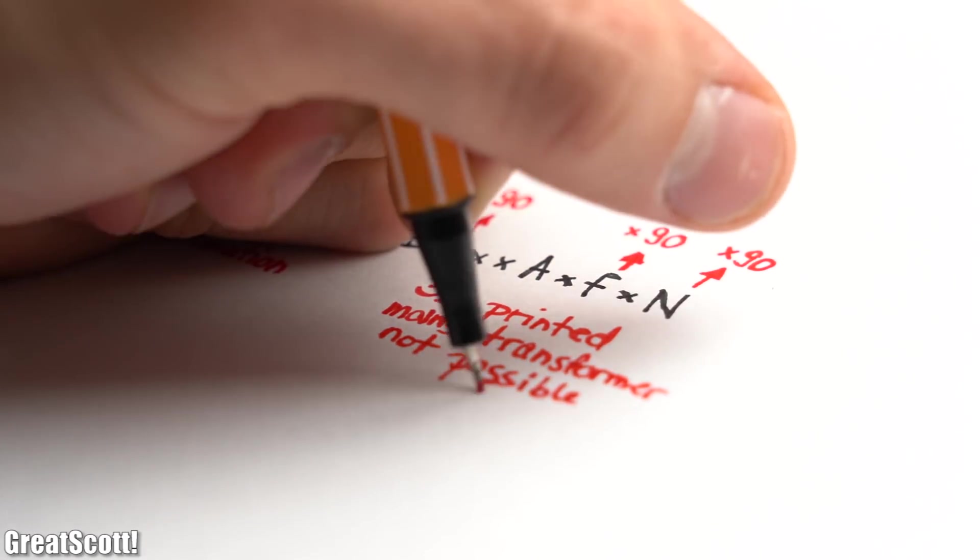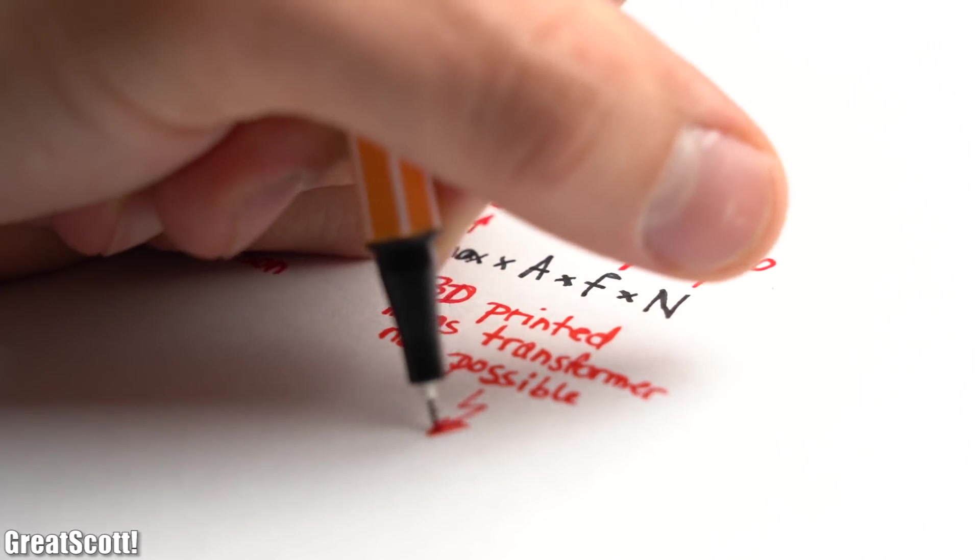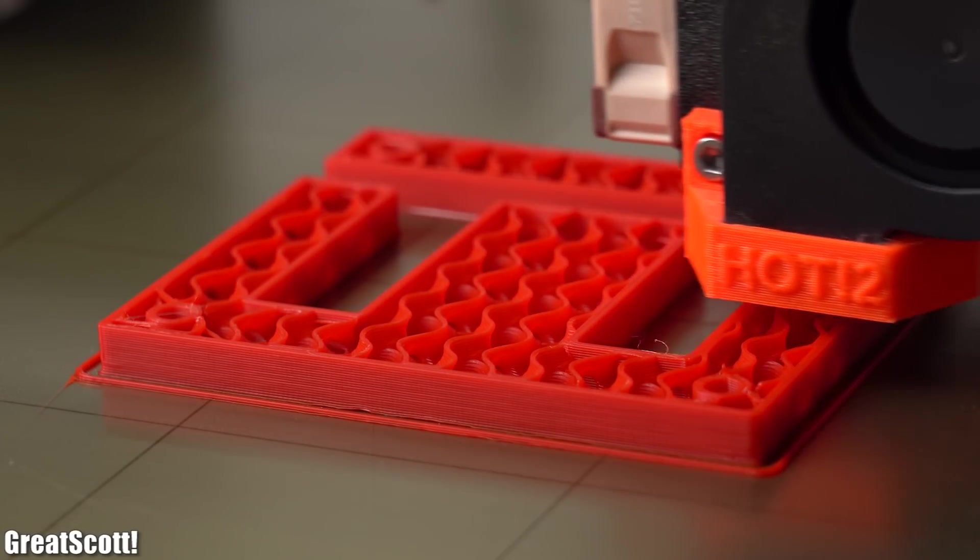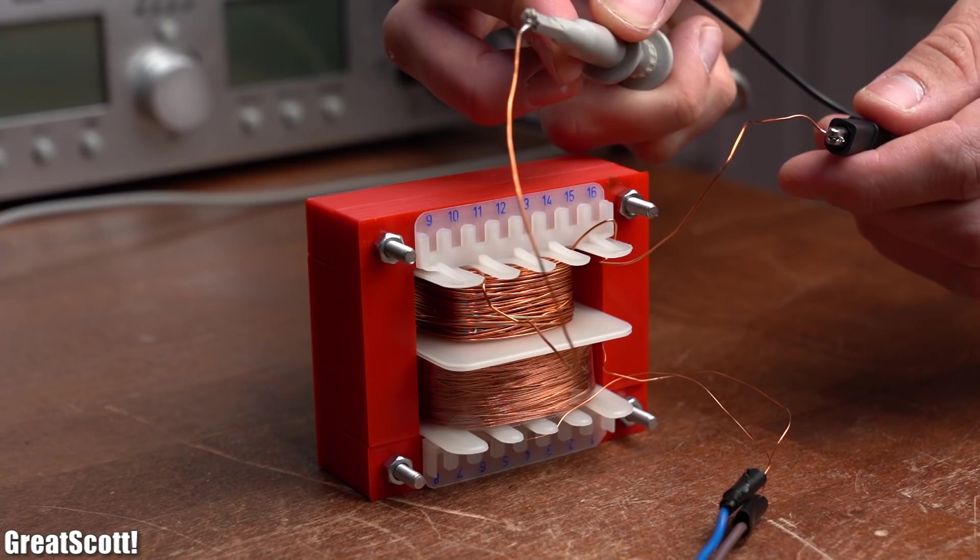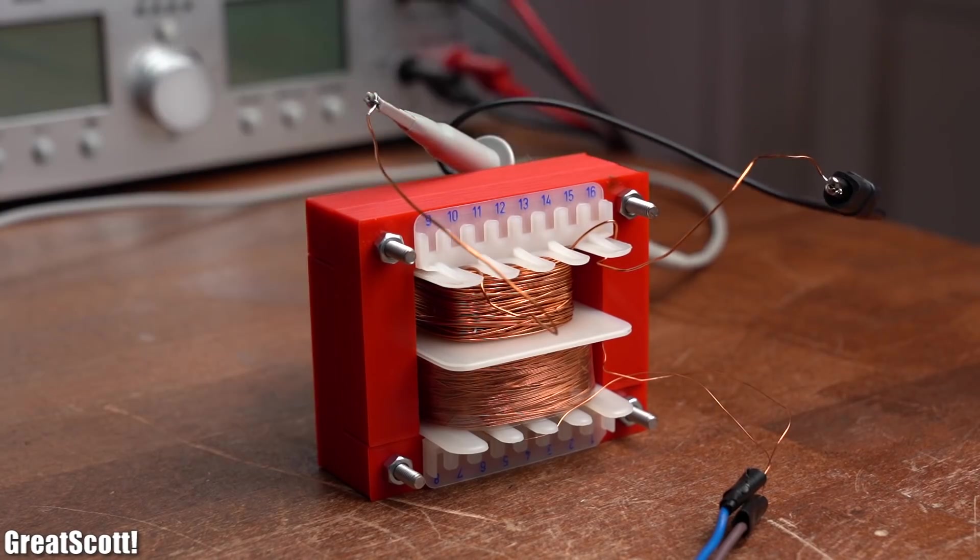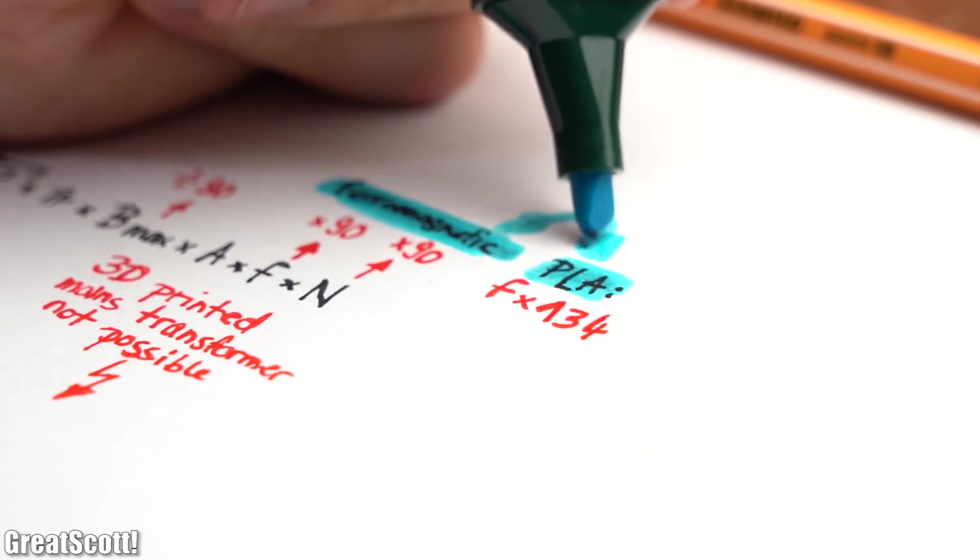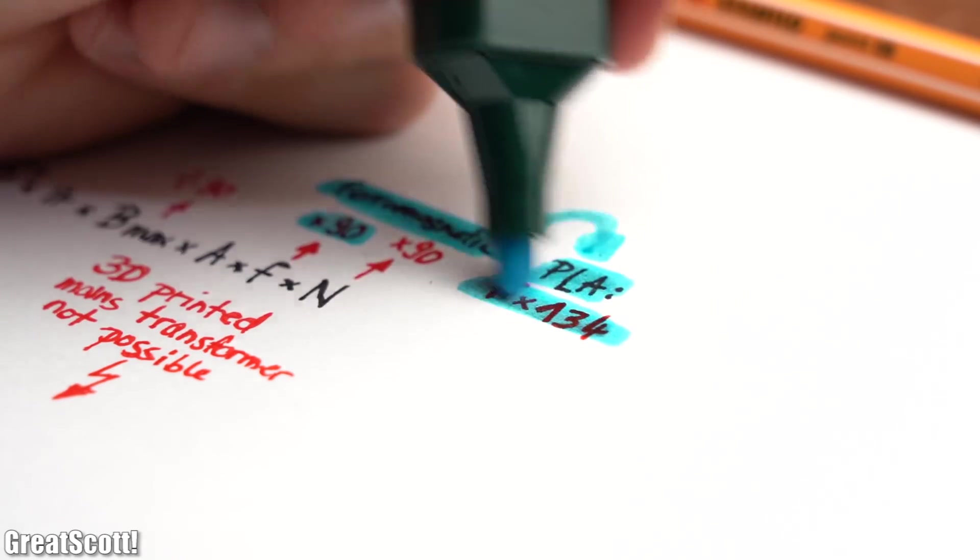Which means a 3D printed main transformer with ferromagnetic filament is not possible. And by the way, if we create the transformer core with plain old PLA filament the frequency would increase to 6.7 kHz, which proves that the ferromagnetic filament does work, just not well enough.